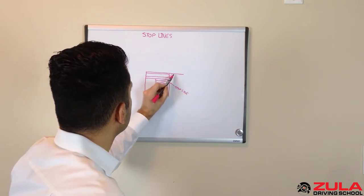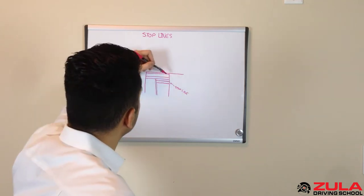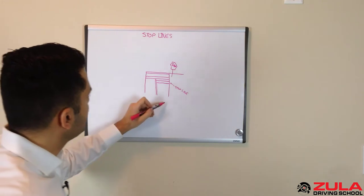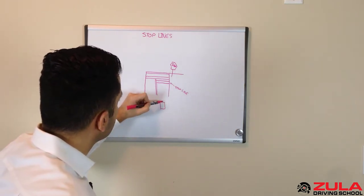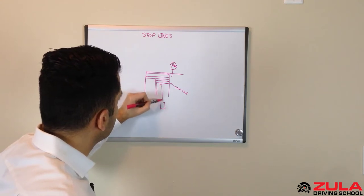And let's say there's a stop sign here. So when you're approaching this, you want to make your stop before the stop line.